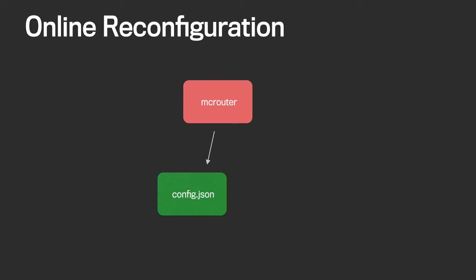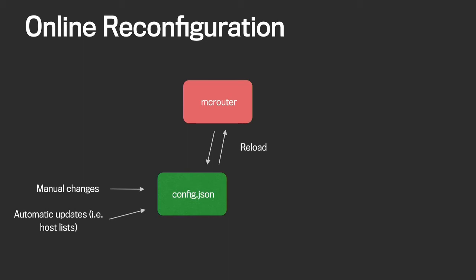Another feature is online reconfiguration. In a live production system, you need to swap in and out cache servers and change the routing configuration from time to time. MacRouter will monitor any changes to the configuration file and automatically reload it in the background with no latency impact on requests. As soon as the new configuration is ready to use, it's atomically swapped and new requests will be routed accordingly. If the new configuration is somehow invalid, MacRouter will keep using the old configuration — and this has actually saved us in the past.